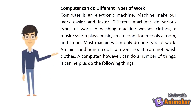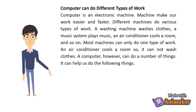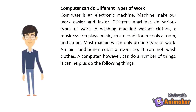Computer can do different types of work. A computer is an electronic machine. Machines make our work easier and faster. Different machines do various types of work. A washing machine washes clothes, a music system plays music, an air conditioner cools a room, and so on. Most machines can only do one type of work.